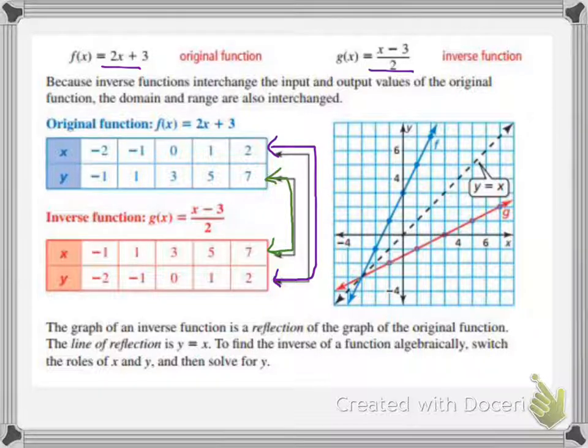The graph of an inverse function is a reflection of the graph of the original function. The line of reflection is a little bit different. The line of reflection is this line here. It is the y equals x. So just thinking about graphing y equals x, you would start at 0, 0 as your y intercept, and then you would go up one, right one, up one, right one, or down one, left one. That's how you come up with this line of reflection. We notice that it is absolutely flipped on that line of reflection.